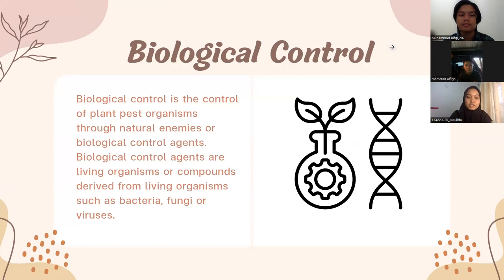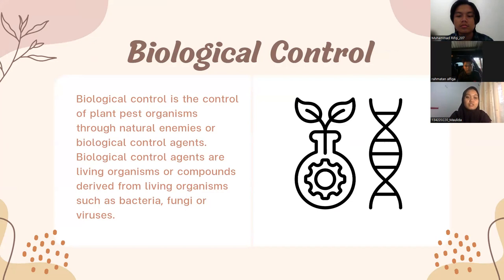Biological control is the control of plant pest organisms using natural enemies or biological control agents. Biological control agents are living organisms or compounds derived from living organisms, such as bacteria, fungi, or viruses. Today, we will explain about viruses for biological control.